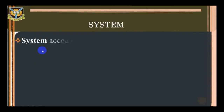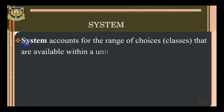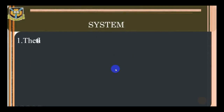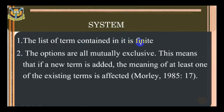System: the range of choices available within a system. System accounts for the range of classes that are available within a unit — this range is called a set of terms. A system has these properties: one, the list of terms contained in it is finite; two, the options are mutually exclusive, meaning that if a new term is added, the meaning of at least one of the existing terms is affected.